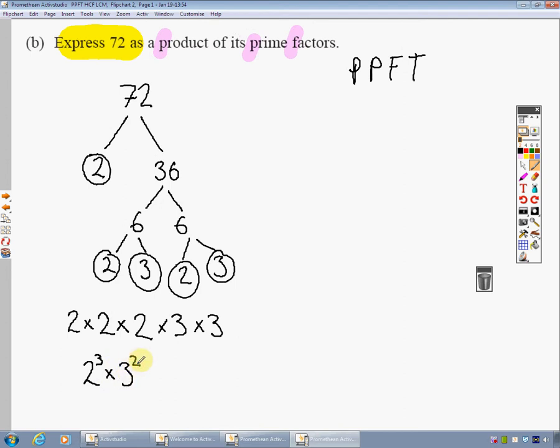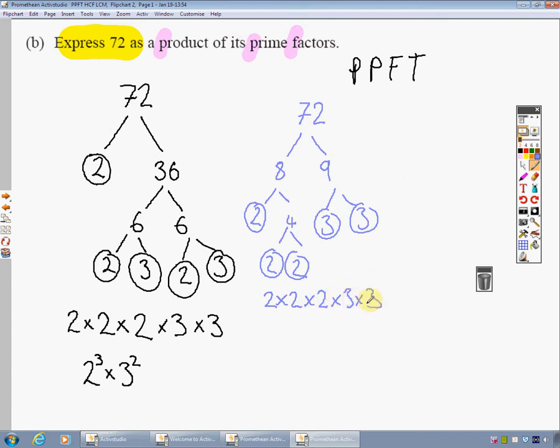I just want to show you how I assume you may have done that just to be sure that there's not only one way. We could have done 72 and said I know that's 8 multiplied by 9. Well that will split down to 2 and 4 which will split down to 2 and 2. Then 9 will go to 3 and 3 and lo and behold I have 2 times 2 times 2 times 3 times 3. Exactly the same answer.